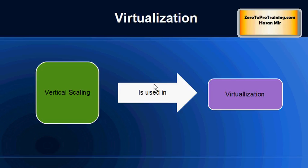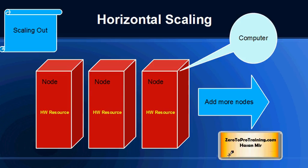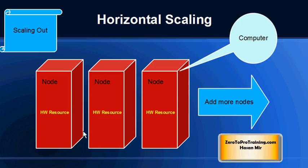One application of vertical scaling is that you can make a computer very powerful by adding more and more resources, and then use that computer for virtualization — creating multiple virtual computers out of that single powerful physical computer.